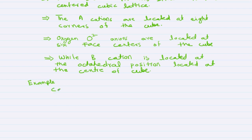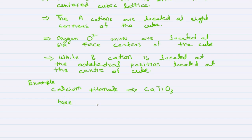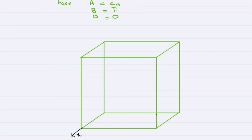Our example will be calcium titanate with chemical formula CaTiO3. Here, A is equal to calcium, B cation is equal to titanium, and oxygen is the anion.